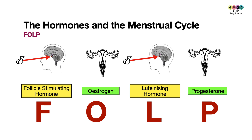F is for Follicle Stimulating Hormone, produced in the pituitary gland. O is for estrogen, produced in the ovaries. L is for Luteinizing Hormone, produced in the pituitary gland. And P is for progesterone, also produced in the ovaries. We will learn specifically where each is produced later on.